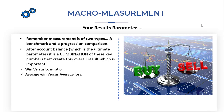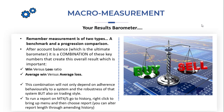After account balance, which is the ultimate barometer, it's a combination of key numbers that create this overall result. These key numbers are win versus loss ratio and average win versus average loss. How these numbers look will depend on your behavioral adherence to a system, the robustness of that system, and your particular trading style. For example, an aggressive trader may have a very good win/loss ratio but comparable average win versus average loss — say, seven wins for three losses at a 70% win rate, with a $500 average win and $500 average loss.